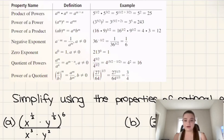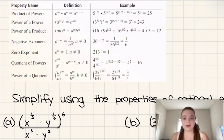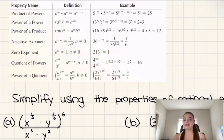Then we have the quotient of powers, where if we have two bases that are the same raised to different powers, we can subtract those powers. Then we have the power of a quotient: if we have a over b to the power of m, that's the same as taking a to the power m and b to the power m separately and then dividing them.